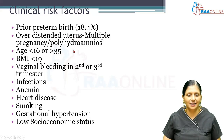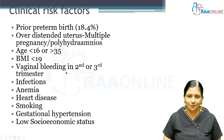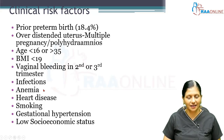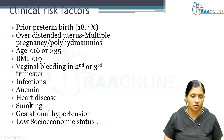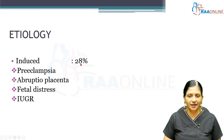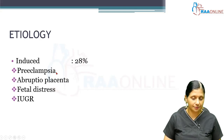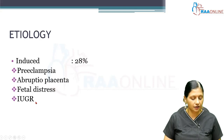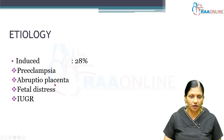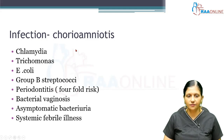Clinical risk factors for preterm labor include: prior preterm birth (most common), over-distended uterus from multiple pregnancies or polyhydramnios, age less than 16 or more than 35, BMI less than 19, vaginal bleeding in the second or third trimester, infections, anemia, heart disease, smoking, gestational hypertension, and low socioeconomic status. The most common causes for inducing preterm labor are preeclampsia, abruptio placentae, fetal distress, and fetal growth restriction.